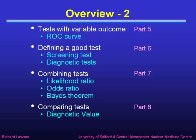In part five of this lecture I'll talk about tests which have variable outcomes and in particular I'll deal with something called the ROC curve. In part six I'll talk about how we define a good test and distinguish between screening tests and diagnostic tests. In part seven I'll talk about combining different tests by explaining things like the likelihood ratio and the odds ratio and explain Bayes' theorem. And finally in part eight I'll show how we can compare tests using diagnostic value.